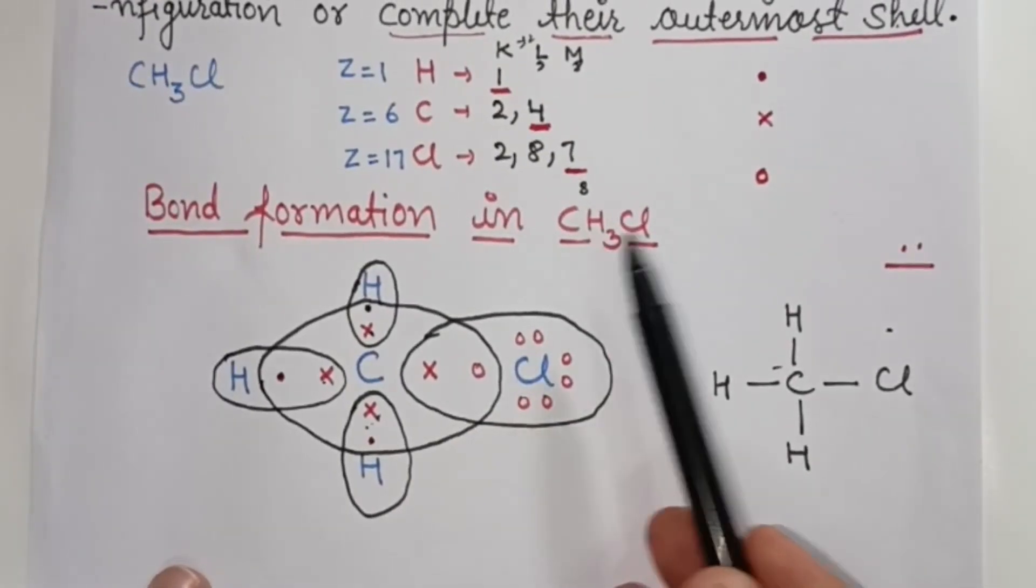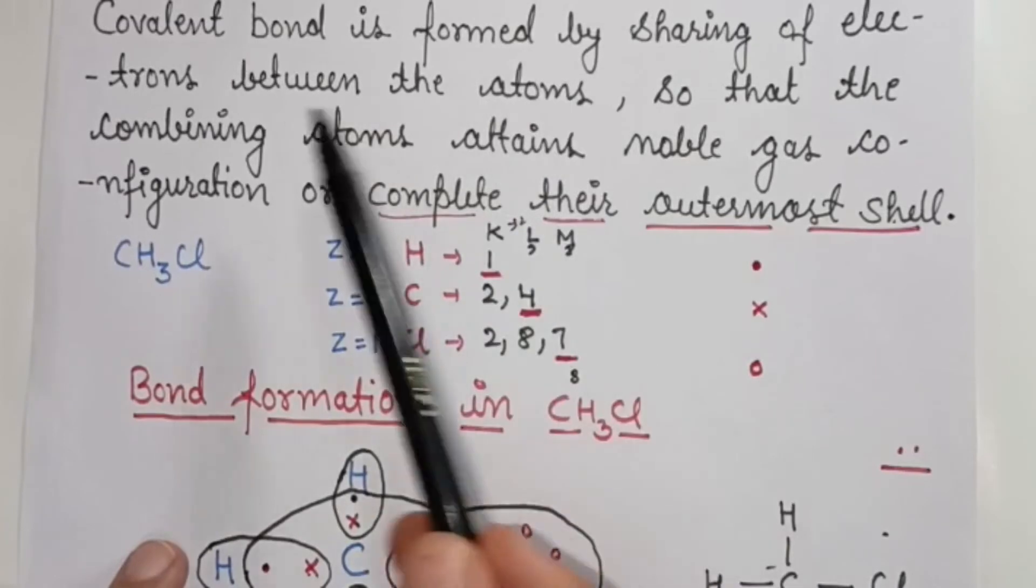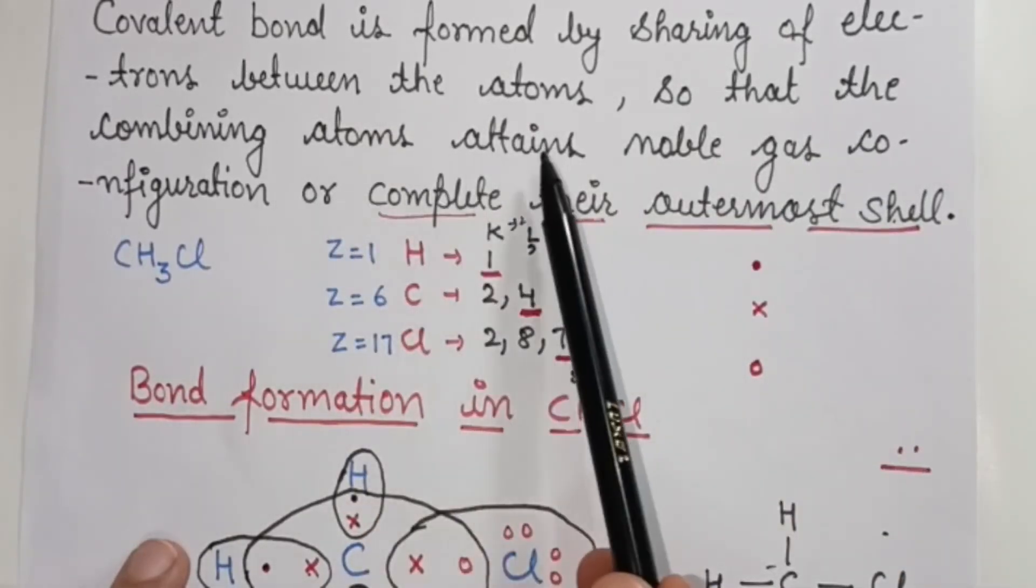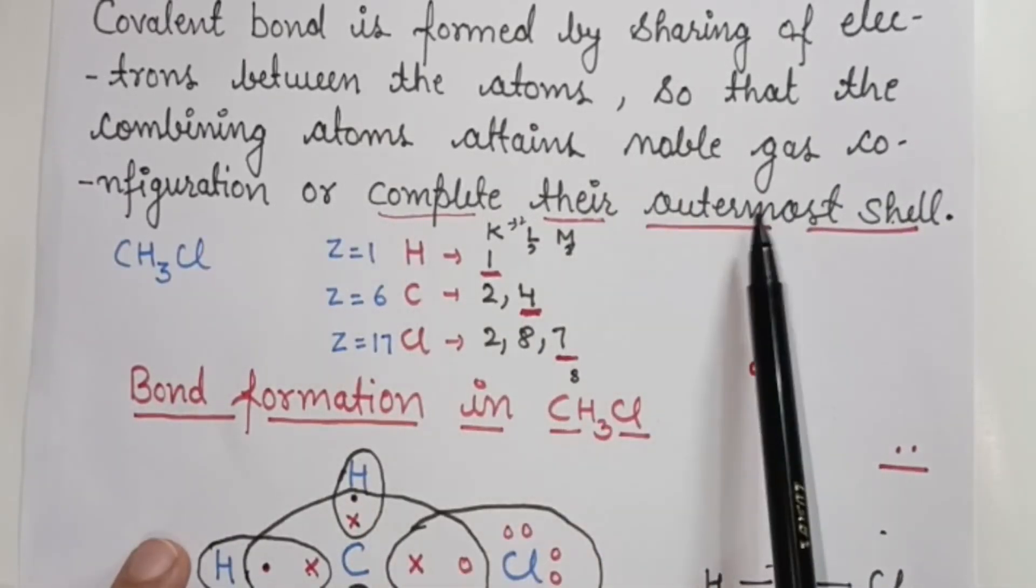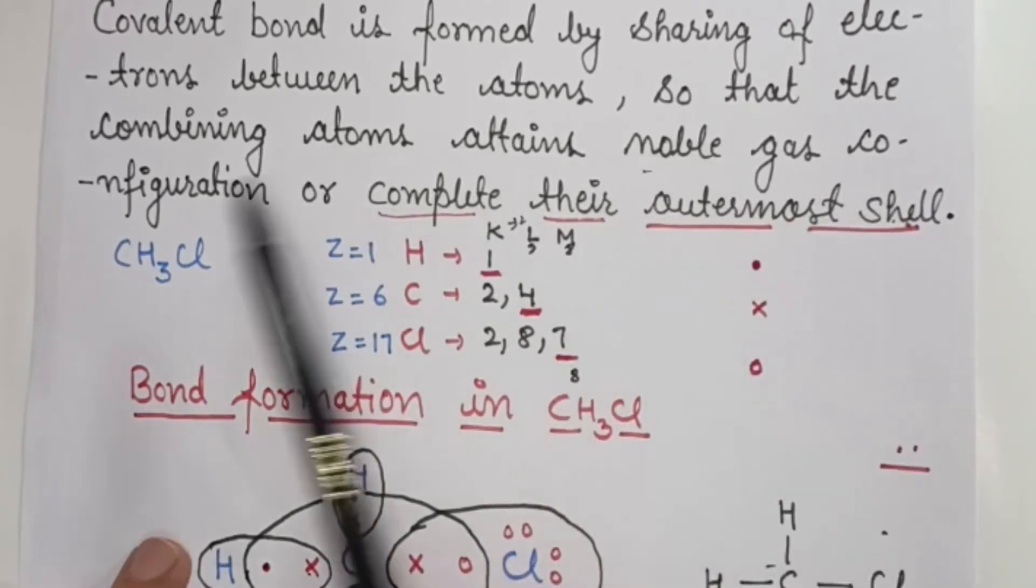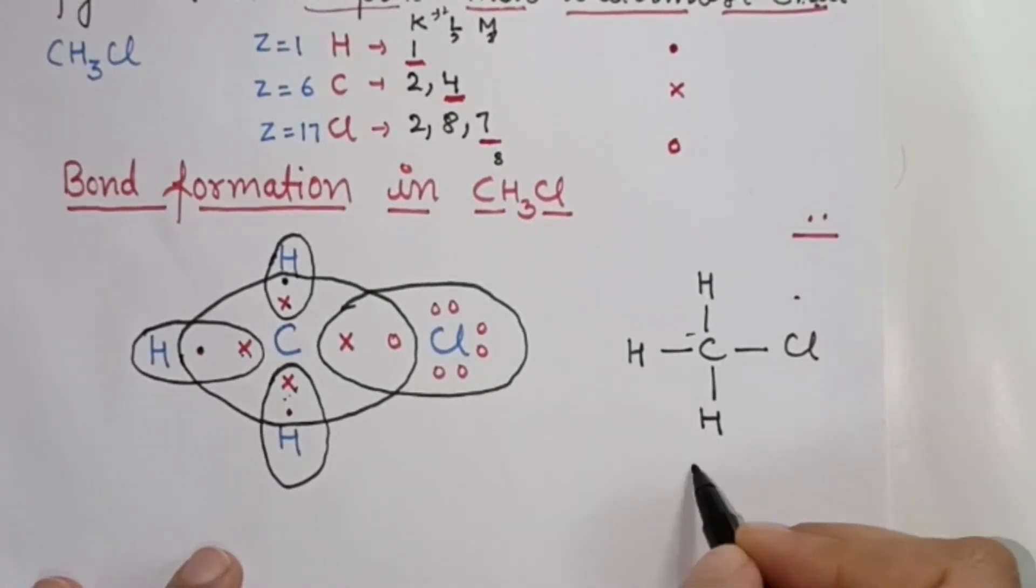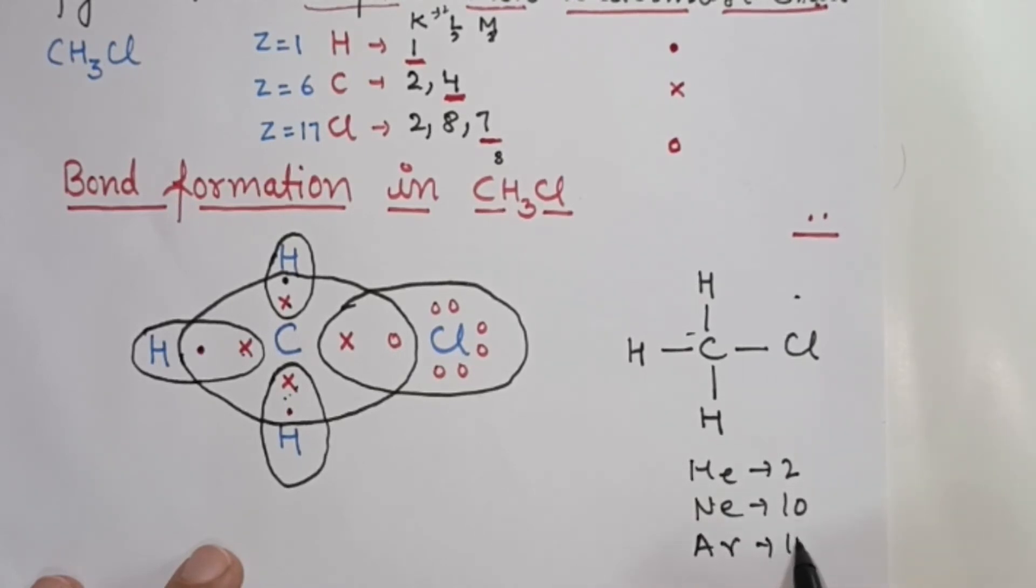You can understand covalent bond by the example of CH3Cl. They share electrons between atoms so that the combining atoms attain noble gas configuration and complete their outermost shell. Helium has atomic number 2, Neon 10, and Argon 18 correspond to hydrogen, carbon, and chlorine configurations.